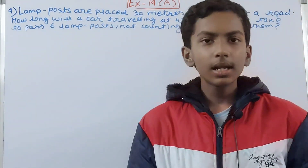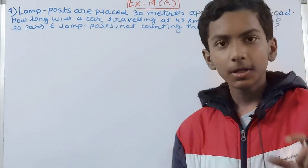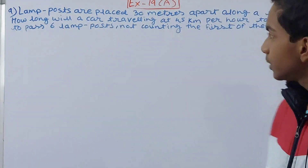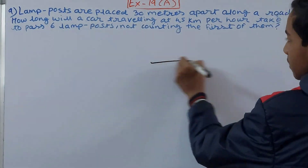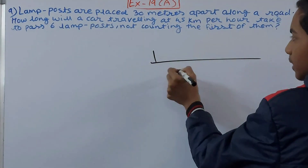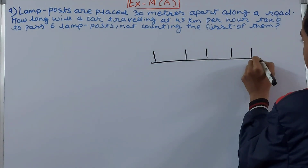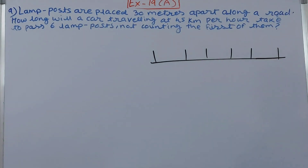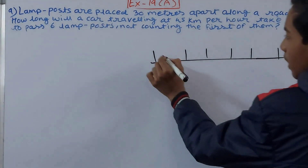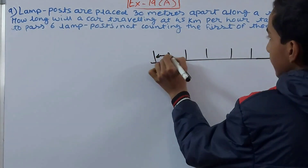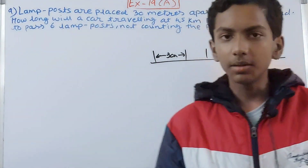So basically there are lamp posts placed on a road at a distance of 30 meters from each other. There are 6 lamp posts placed along the road — one here, one here, one here, one here, one here — that's 5 — and then the 6th one here. The distance between 2 lamp posts is 30 meters.